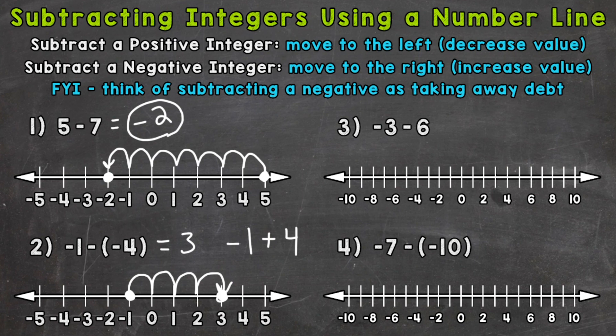You can think of problems subtracting integers as adding the opposite. On to number three, we have negative three minus six. We are subtracting a positive integer, therefore decreasing in value, so we need to move to the left. Or we can think of this as adding the opposite: negative three plus negative six. We start at negative three. I only have the even numbers on that number line because it was too jammed with the odd numbers as well, so we are in between negative two and negative four there, starting at negative three.